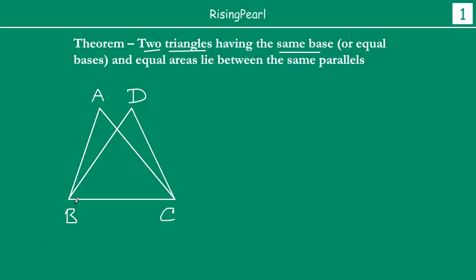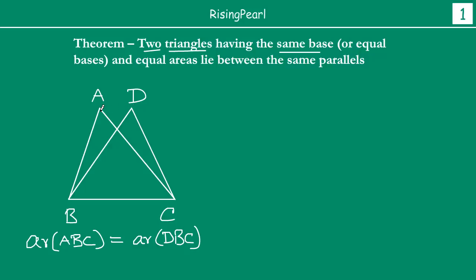So, the base is the same, and the area of triangle ABC is equal to the area of triangle DBC — remember, these are what is given. So we have to show that these two triangles lie between the same parallel lines. This means, friends, if you join AD, the line AD will be parallel to BC. That is, these two vertices A and D of these two triangles basically lie in between the same parallel lines AD and BC.